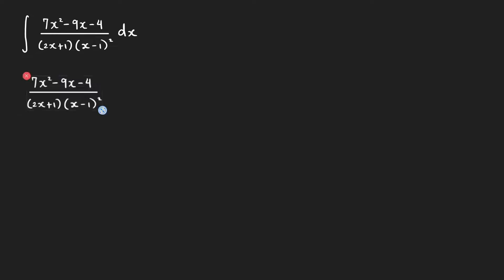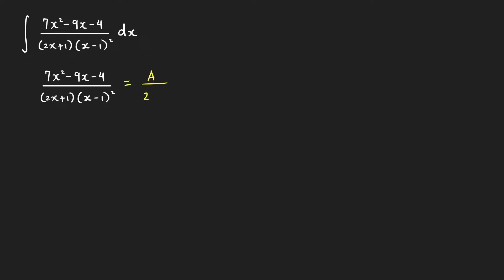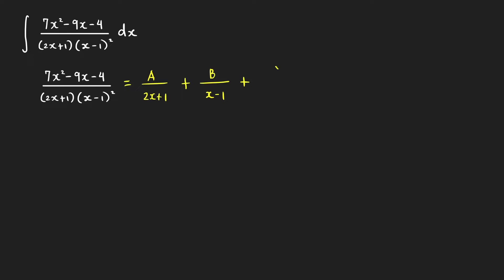We may write this function here as the sum of fractions. So we have A over 2x plus 1, which is the fraction corresponding to this factor in the denominator. Since we have a repeated linear factor with multiplicity equal to 2, we have two fractions corresponding to that factor, with constant numerators: plus B over x minus 1, and plus C over the square of x minus 1.